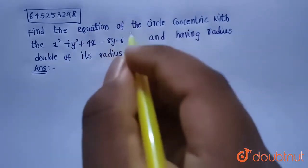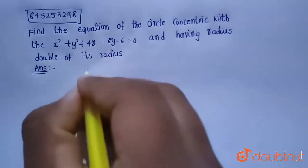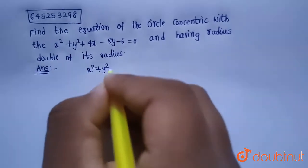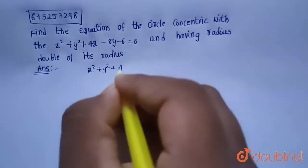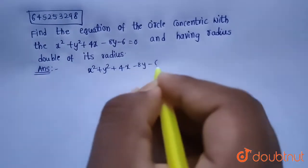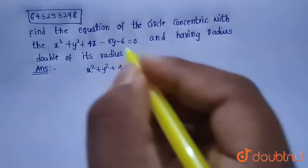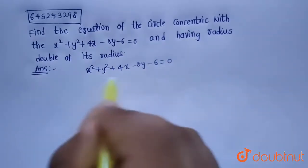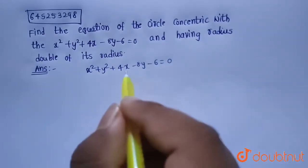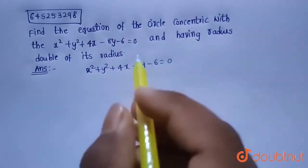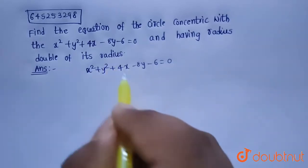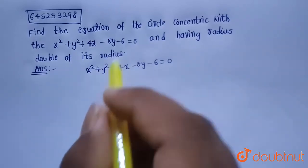Given the circle equation x² + y² + 4x − 8y − 6 = 0. The required circle equation is concentric with the given circle, and we know that if two circles are concentric they will have the same center.